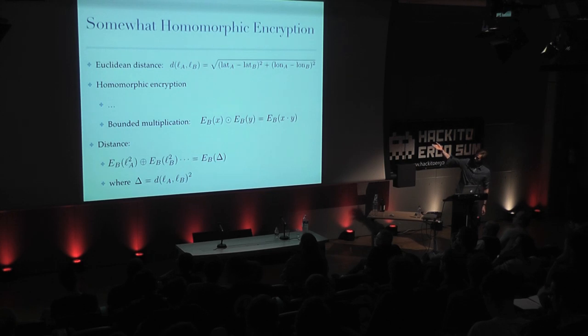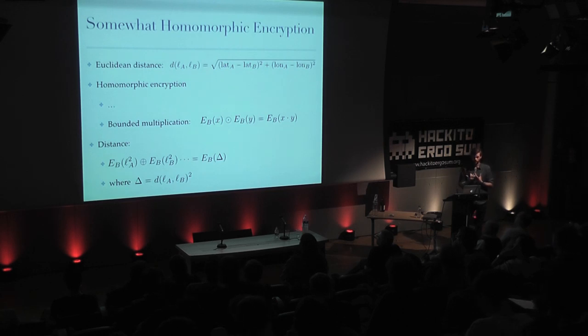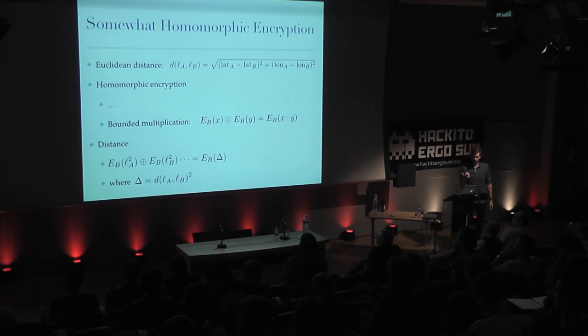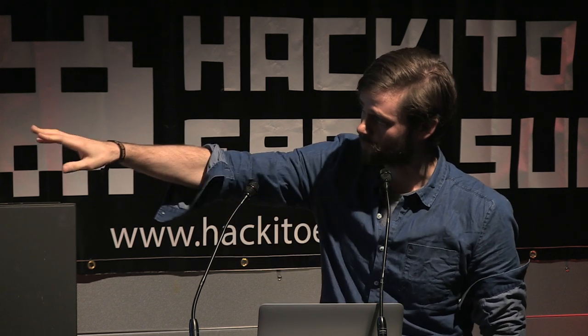For this, we need a somewhat homomorphic encryption scheme — it must also be capable of bounded multiplication, where we can multiply two ciphertexts and get the result in the plaintext domain. It's bounded in the sense that there's only a limited number of multiplications we can do. Every time you multiply ciphertexts, you add a bit of noise to the plaintext, and at some point the noise becomes too much to reliably recover the plaintext. But you can do a few, and in this case we just need to do one, so it's fine. The distance is then computed by rewriting the Euclidean distance formula using basic high school arithmetic.